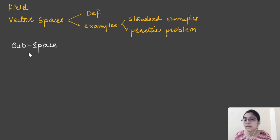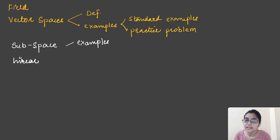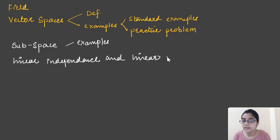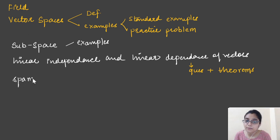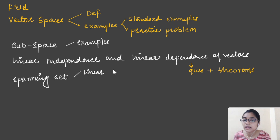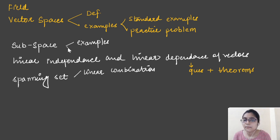After understanding vector spaces, we will cover subspaces with examples. Once that is finished, we will study linear independence and linear dependence of vectors. In this topic, we will cover questions along with theorems — which you can also call concepts — that will be useful in the exam. After that, we will study the spanning set, and before that, we will cover linear combinations.